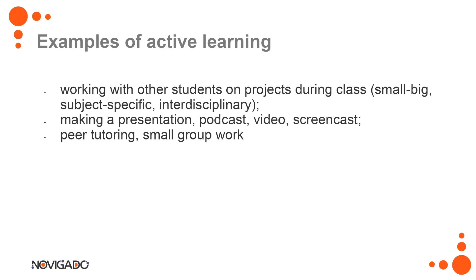But active learning doesn't have to be very big. It might be something small, like making a presentation that shows students' understanding of a certain topic based on reading they have undertaken. Or creating a podcast, screencast, or video that summarizes what they've learned and what the most important aspects of a topic are. It might also be peer tutoring or small group work where students share key elements of content — for example, explaining to each other how to solve an equation in mathematics.